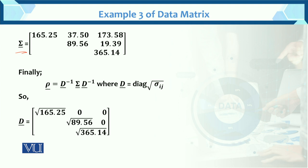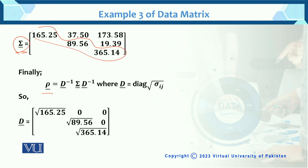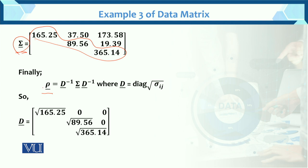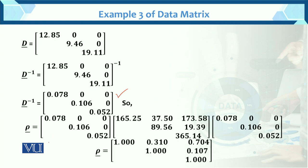Next, find the correlation matrix. To find the correlation matrix, we need D inverse, where D is derived from the covariance matrix. We find the inverse values, for example 1 over 12.85. Then the correlation matrix R = D^(−1/2) · Sigma · D^(−1/2). You can solve the final result step by step — first the first two rows and columns, then the last, to get the full 3 × 3 correlation matrix.